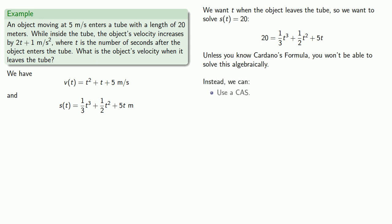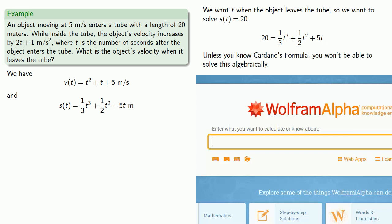First, we can use a computer algebra system. Second, we might do some calculus and use the intermediate value theorem. Or third, we might use even more calculus and use Newton's method. We can use a computer algebra system like Wolfram Alpha. I'm not a paid spokesperson for Wolfram Alpha, but if they want to send some money my way, I'm happy to accept.